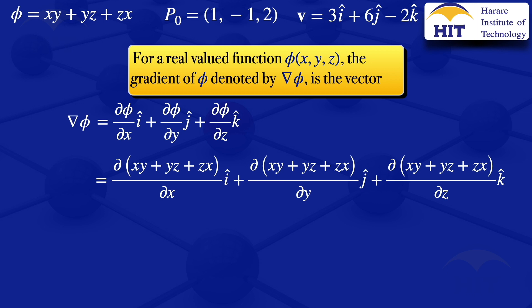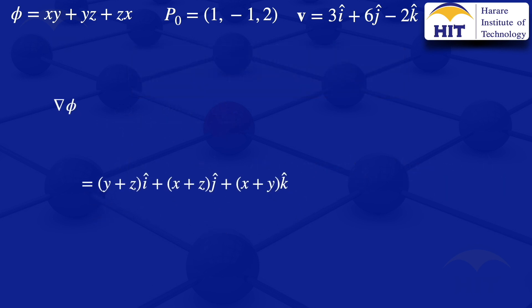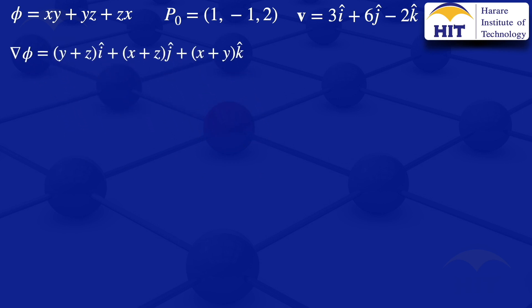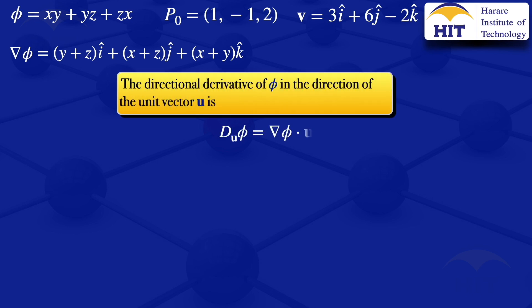When we evaluate those partial derivatives, our expression simplifies to (y + z)i + (x + z)j + (x + y)k. That's our ∇φ. By definition, the directional derivative of φ in the direction of the unit vector û is the dot product of ∇φ and û.